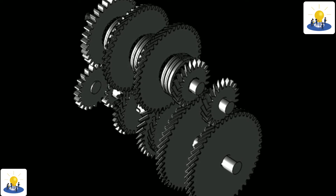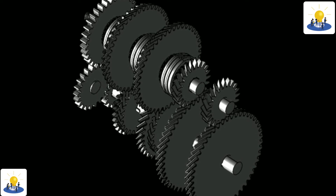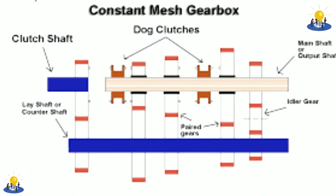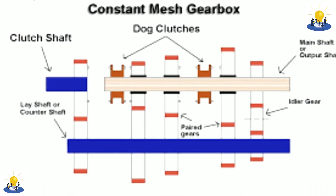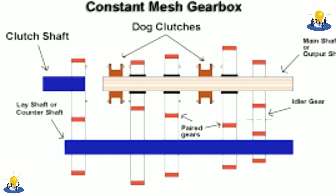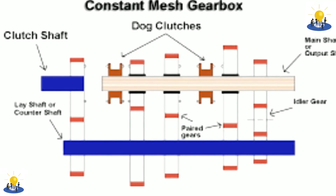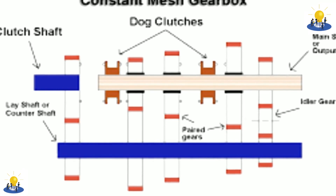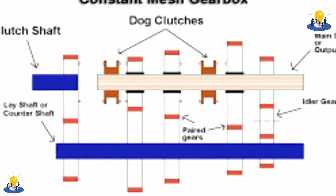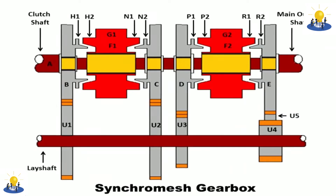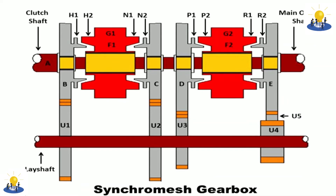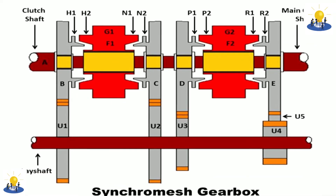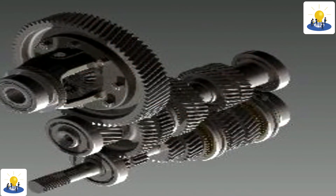In a modern gearbox, the action of all of these components is so smooth and fast it is hardly noticed. Many transmissions do not include synchromesh on the reverse gear. The synchromesh system must also prevent the collar from bridging the locking rings while the speeds are still being synchronized. This is achieved through blocker rings, also called bulk rings.